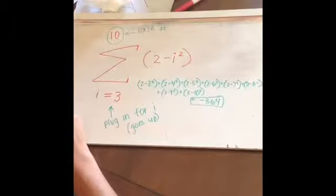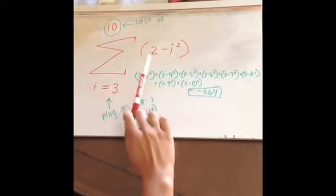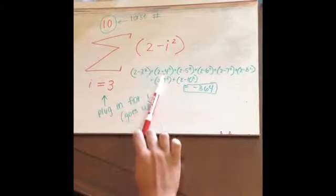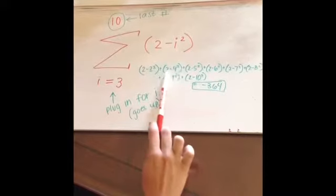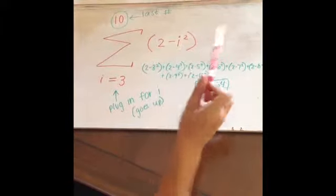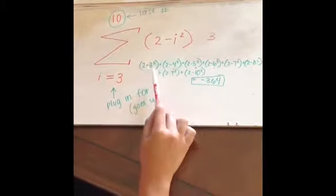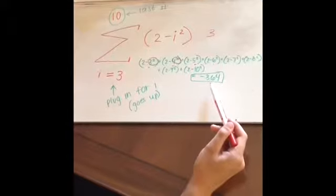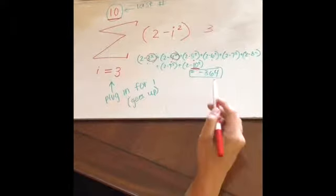This is summation notation. The number on top is the last number. The number on bottom is what you plug in for I. When you're given the formula, you just plug in the number for I, and every time it goes up. As you see here, I plugged 3 in for I, and for every parentheses, I went up from 3. So 3, 4, 5, 6, and so on. Then I squared each of them and added them together, and it got negative 364. It goes up to 10, up to the last number. That's summation notation.